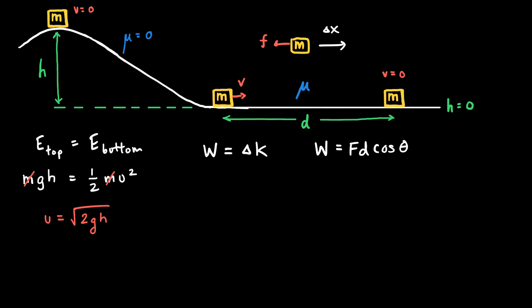The cosine of 180 is negative 1, so the friction force does an amount of work equal to −fd. That work equals the change in kinetic energy of the cart. The final kinetic energy is zero because the cart comes to rest, and the initial kinetic energy is ½mv². The minus signs cancel, and the friction force exerted on the cart as it slides to a stop is f = mv²/(2d).